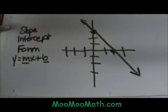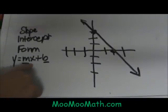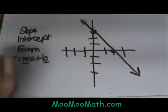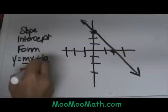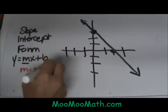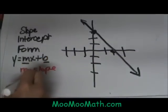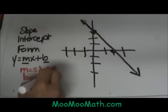Hi and welcome to Moo Moo Maths. Today we are going to look at slope intercept form of a line. What form is that in? It is in y equals mx plus b, where m is the slope, so m is equal to the slope of the line and b is equal to the y intercept.